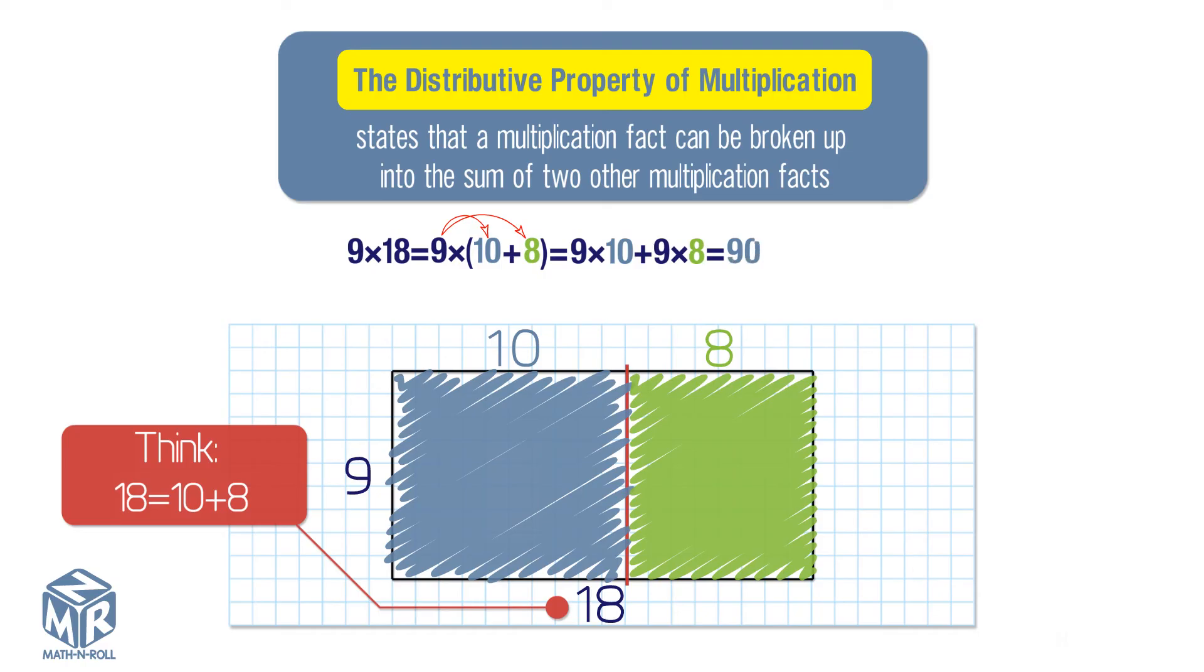9 times 10 equals 90. 9 times 8 equals 72. Then find the sum of the products. 90 plus 72 equals 162. So 9 times 18 equals 162.